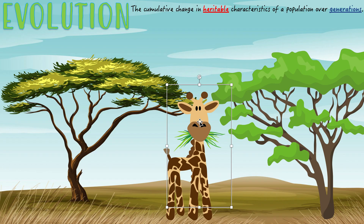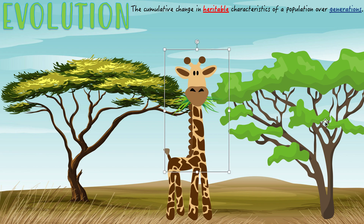Because of that, its genetics would get passed on to its kids, and then its child would have a slight edge because it would have the genes for a longer neck. Just like that, over time, this kept happening and eventually nowadays we have giraffes with super long necks. This is basically evolution. So evolution is the cumulative change in heritable characteristics of a population over generations.